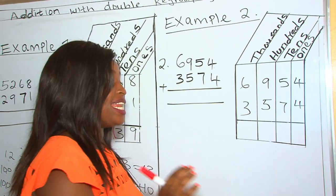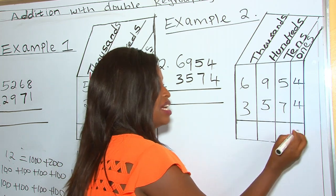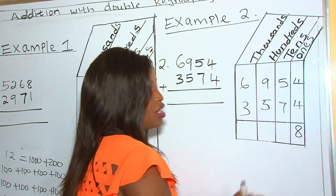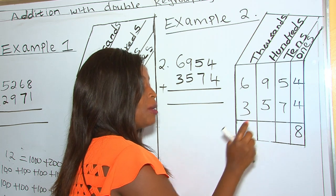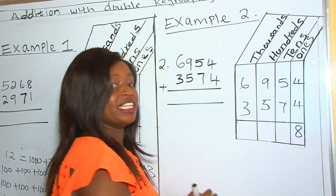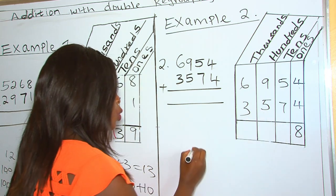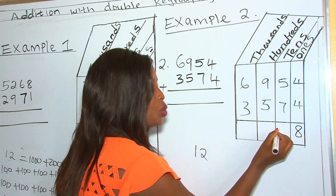So as usual, we normally begin by adding our ones. So 4 ones plus 4 ones, we get 8 ones. 5 tens plus 7 tens, we get 12 tens. So 12 tens, you can't record 12 here.